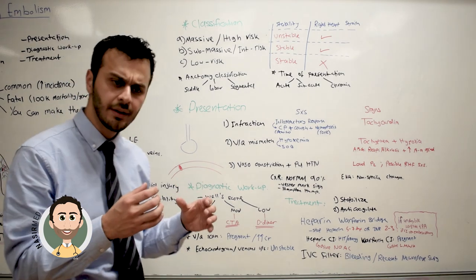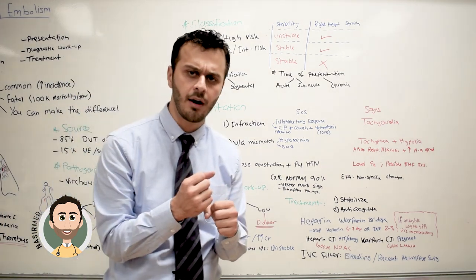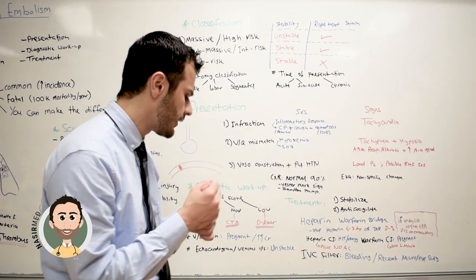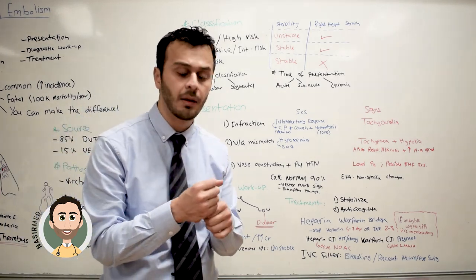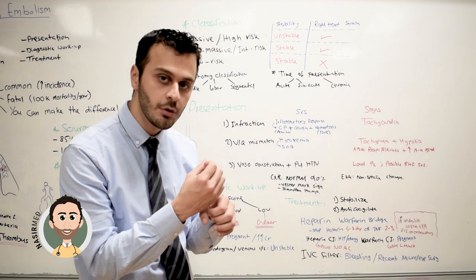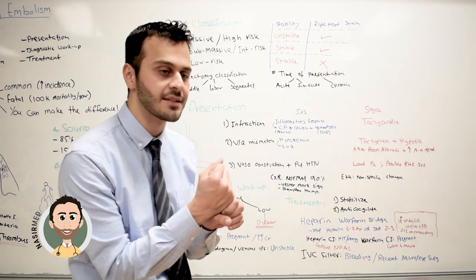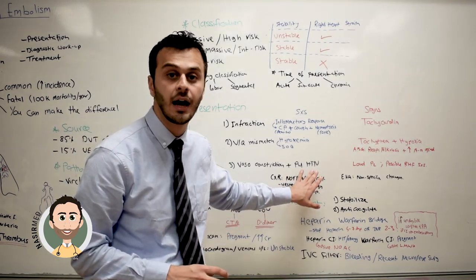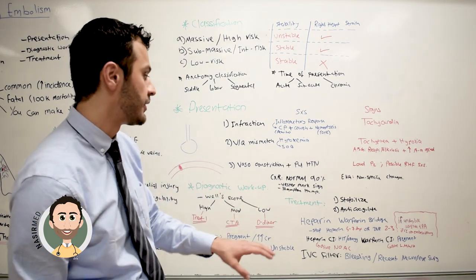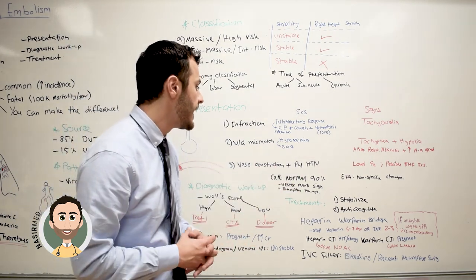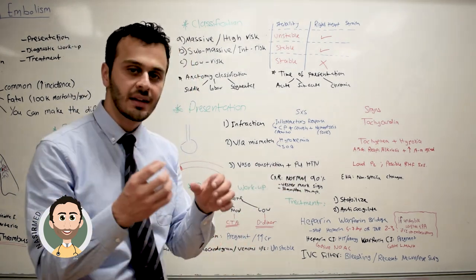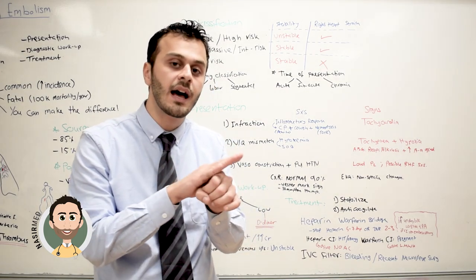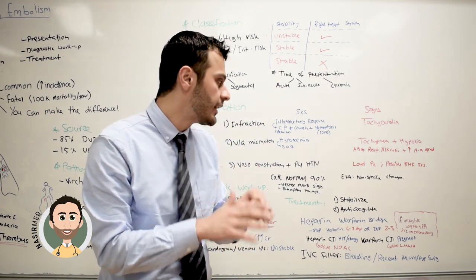Because of hypoxia, the pulmonary arteries will vasoconstrict as a response, causing pulmonary hypertension and increasing blood pressure in the pulmonary arteries. Because of that, the pulmonary valves will have a hard time closing, leading to a loud P2 when you auscultate these patients.